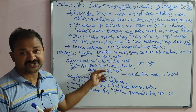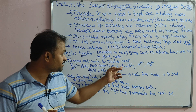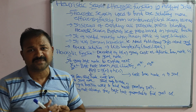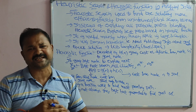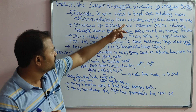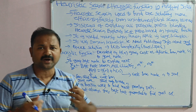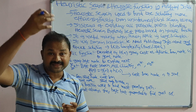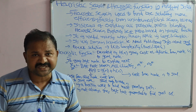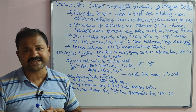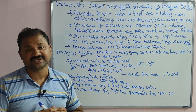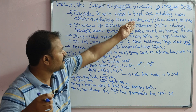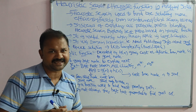Various heuristic search techniques include best-first search, hill climbing, A* algorithm, and AO* algorithm. Various uninformed or blind search techniques include breadth-first search, depth-first search, uniform cost search, bidirectional search, and depth-limited search. All of those are uninformed or blind search techniques.